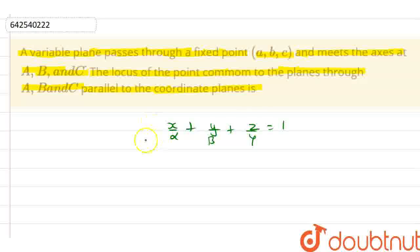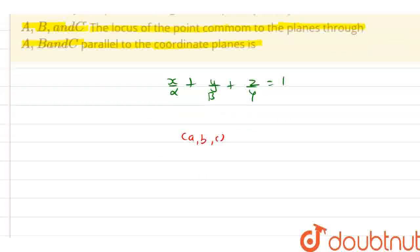Now here, this equation of plane passes through the point A, B, C. So we have A by alpha plus B by beta plus C by gamma equals 1. Name this equation as equation number 1.